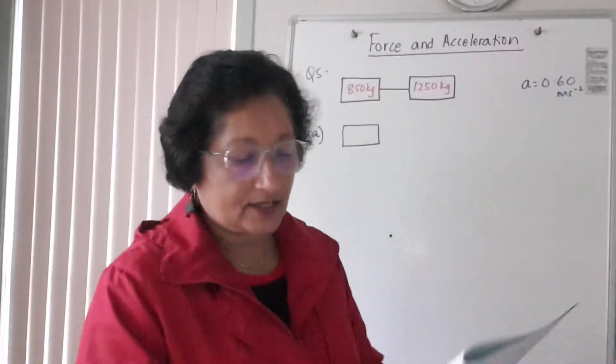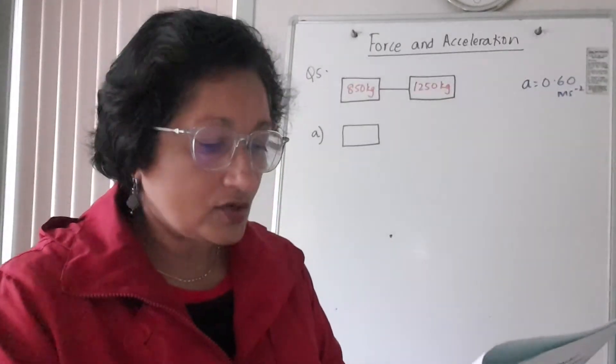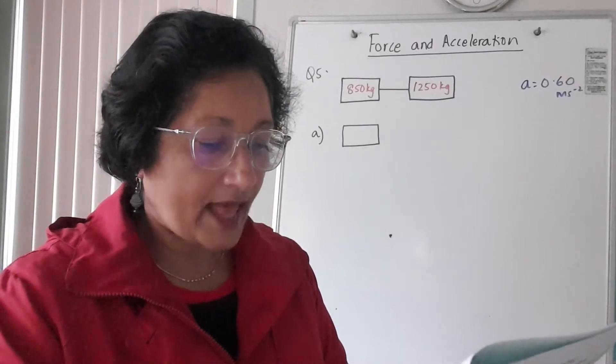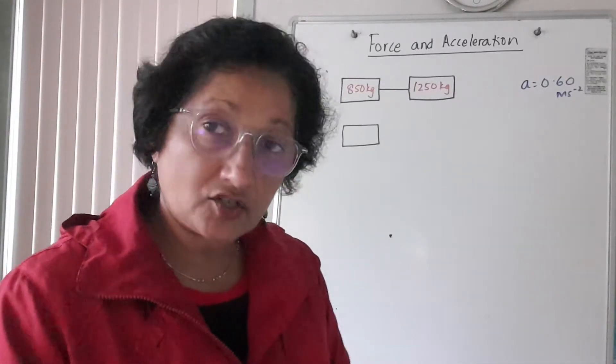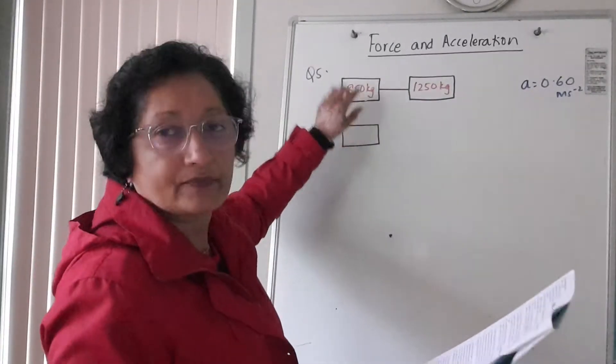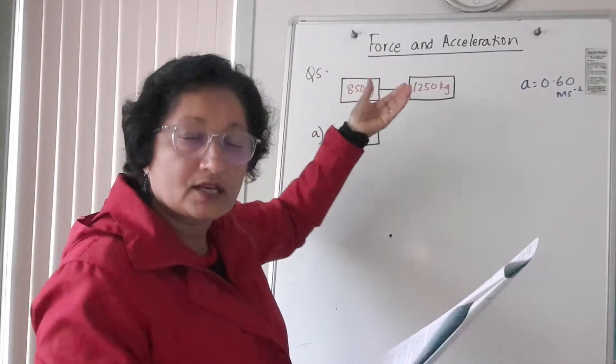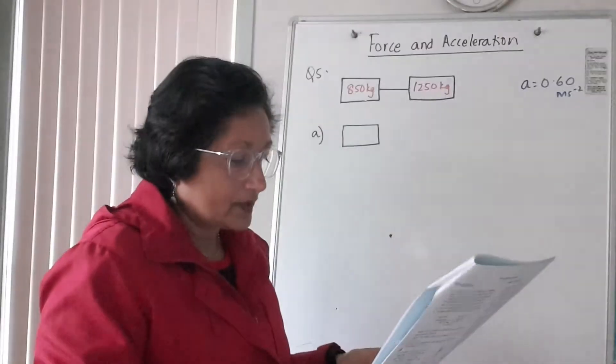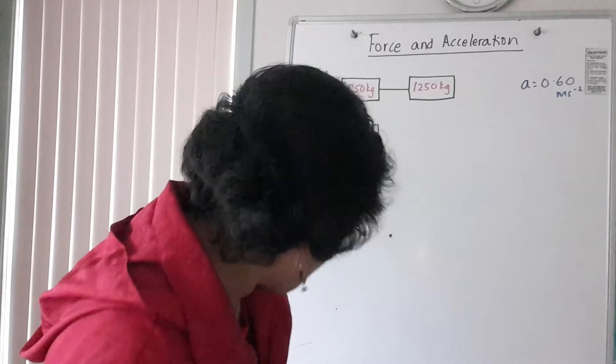And there's your value for acceleration. So part A: draw a diagram showing all the forces acting on the car which is being towed. So that is this car, this is the car that's being towed. The word tow means to pull. So all the forces acting on that car.